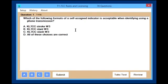And the questions begin to come up. Which of the following formats of a self-assigned indicator is acceptable when identifying using a phone transmission? You look at the choices that are below. And you pick the one that you feel is correct. And click Submit.